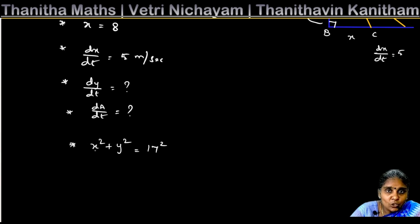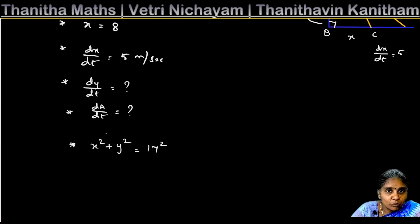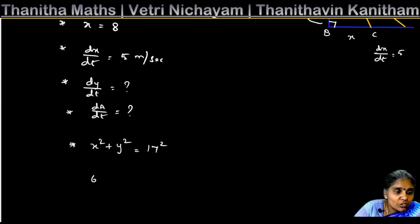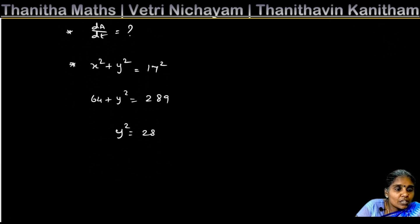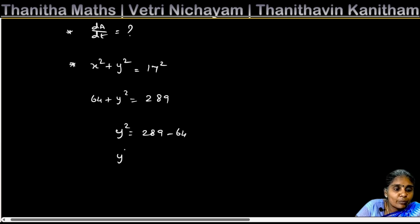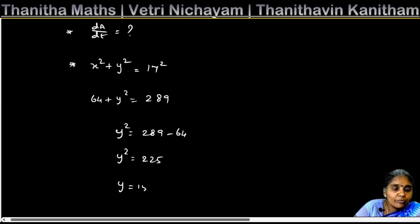We know x and dx/dt. x is 8, and dx/dt is 5 meters per second. We need dy/dt, but first we find y. Substituting x = 8: 8² = 64, so 64 + y² = 289. Therefore y² = 225, and y = 15 meters.